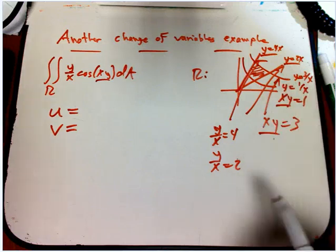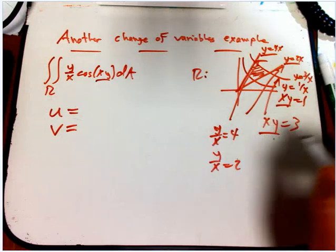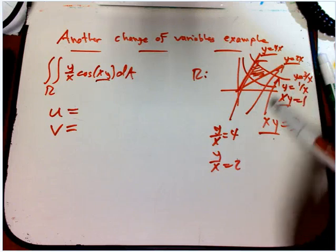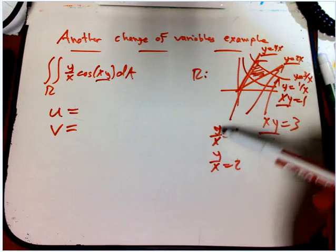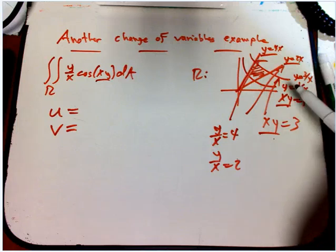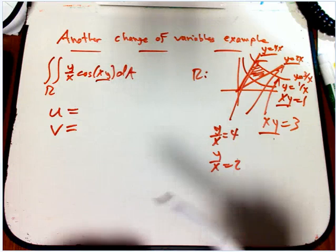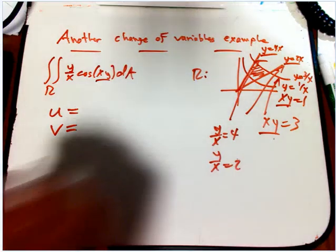Rather like the example in a video I just recorded with the parallelogram, we've got a situation where certain combinations of x, y can be set to constants to describe this region. And those combinations are also showing up in the integrand, which is gravy really. It doesn't always happen that way.